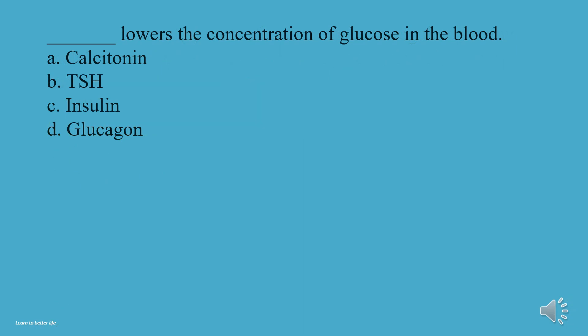What lowers the concentration of glucose in the blood? A, Calcitonin. B, TSH. C, Insulin. D, Glucagon. The answer is C, Insulin.